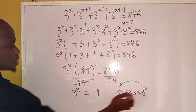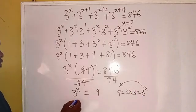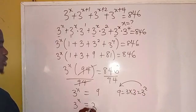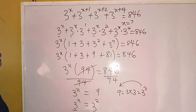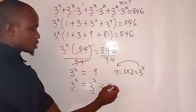So therefore we write 9 in this form as 3 to the power of 2. So we have 3 to the power of x equals 3 to the power of 2. Since the bases are the same, this implies that x equals 2.